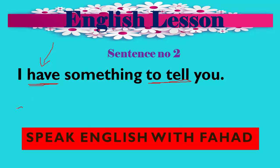If you want to make it negative: 'I do not have something to tell you' — میرے پاس آپ کو بتانے کے لیے کچھ نہیں ہے. People get confused because 'have' is there and we used 'do not' — but here 'have' is used as a main verb, not a helping verb. So we say: 'I do not have something to tell you.' Interrogative: 'Do I have something to tell you?' — کیا میرے پاس آپ کو بتانے کے لیے کچھ ہے۔ This also shows present situation.